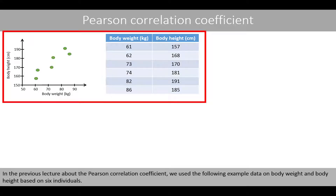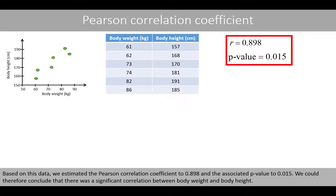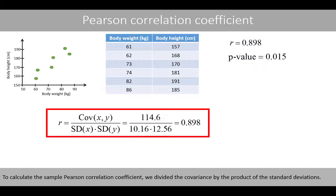In a previous lecture about the Pearson correlation coefficient, we used the following example data on body weight and body height based on six individuals. Based on this data, we estimated the Pearson correlation coefficient to 0.898 and the associated p-value to 0.015. We could therefore conclude that there was a significant correlation between body weight and body height. To calculate the sample Pearson correlation coefficient, we divided the covariance by the product of the standard deviations.